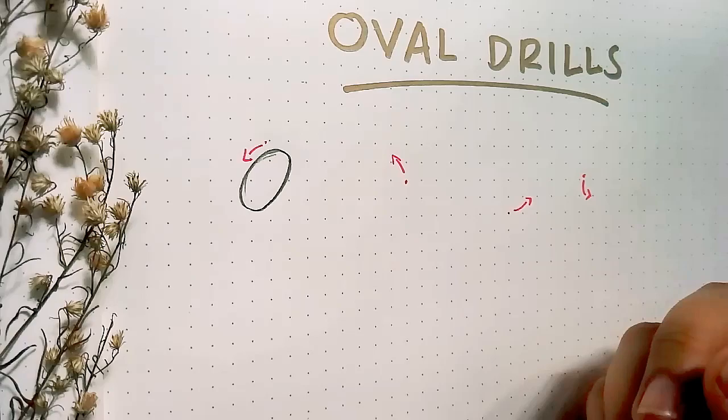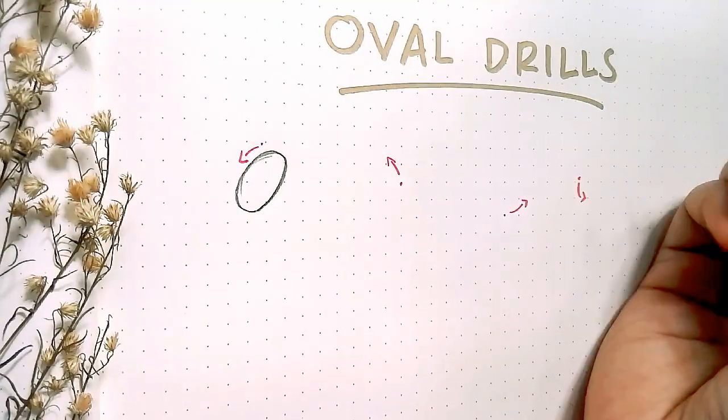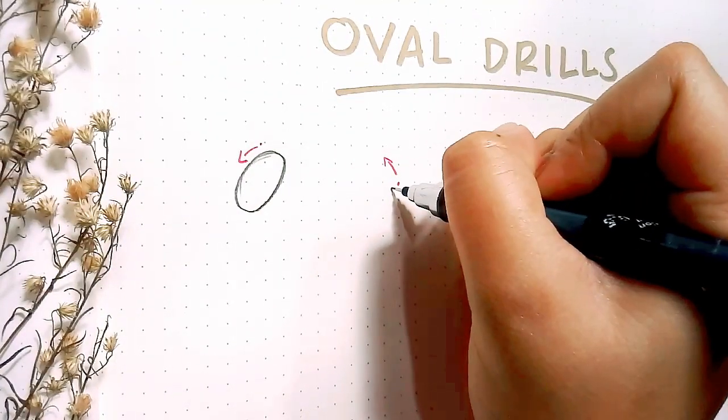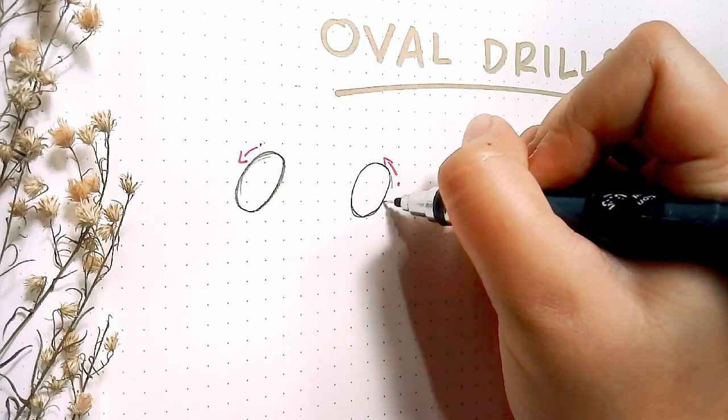And they'll come from different sides like from the right, from the left, from the top, from the bottom. So horizontal and vertical.